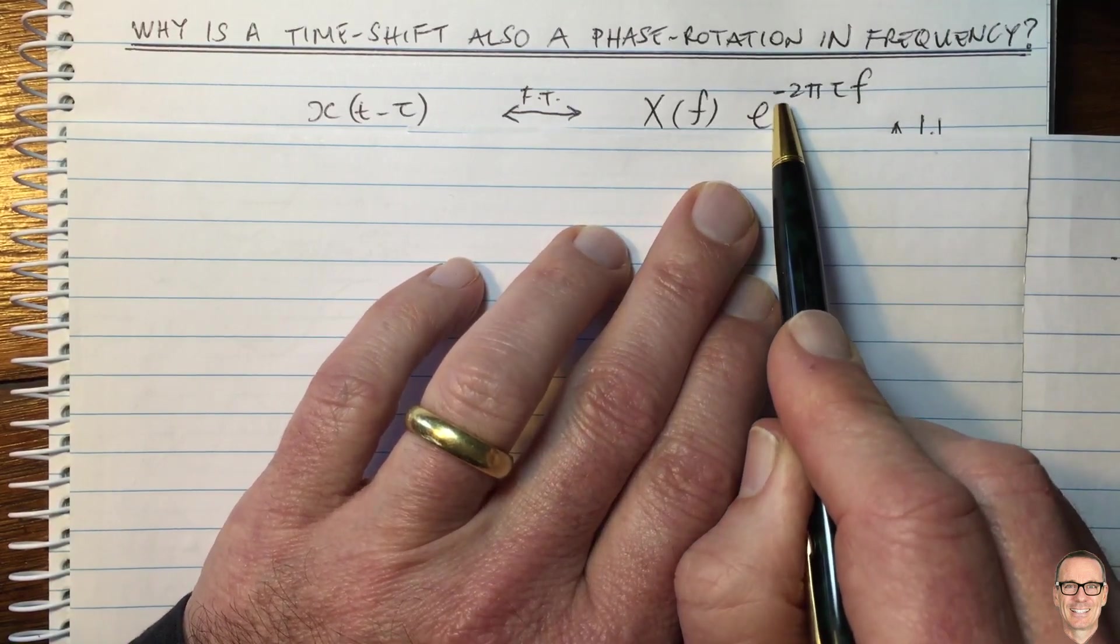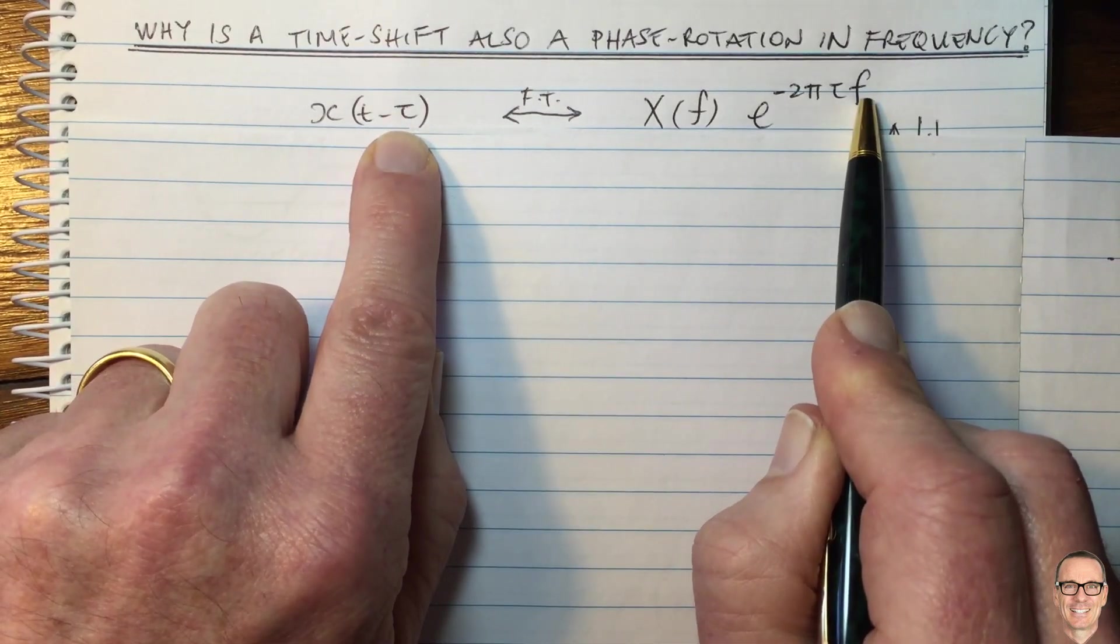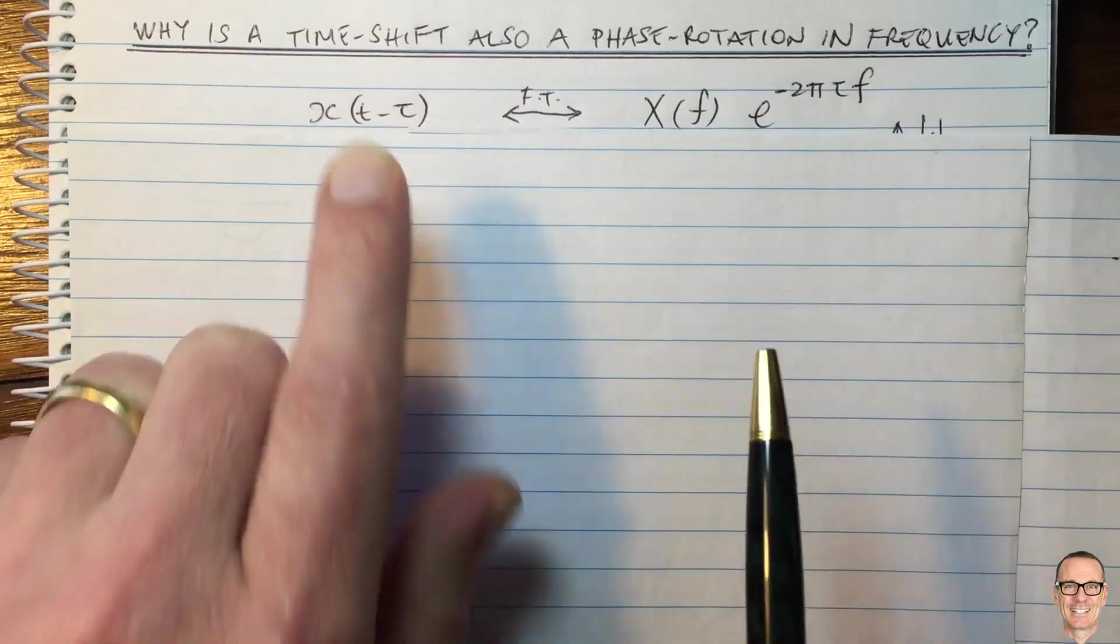And its rotation is minus 2 pi times Tor, which was the time shift, times the frequency. So this is a function of frequency. So let's understand why that's the case.